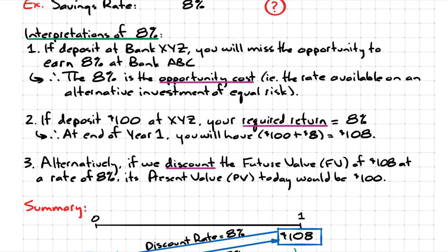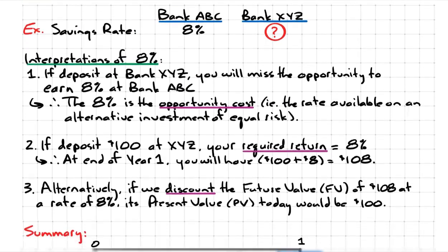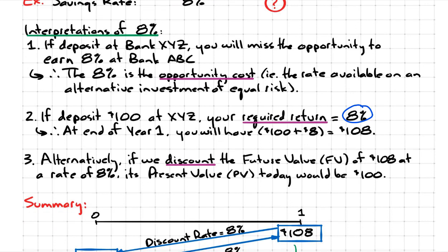Now supposing that XYZ agrees and says, "Okay, we'll pay 8%." Remember you deposit $100 at the beginning of the year. Therefore, at the end of year one, you will have your initial capital back plus 8% interest, which works out to $8, so you'll get a total amount of $108 at the end of the first year.